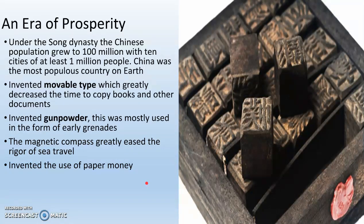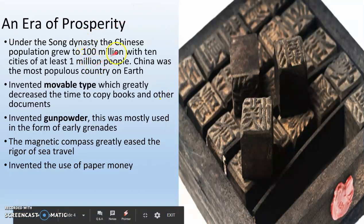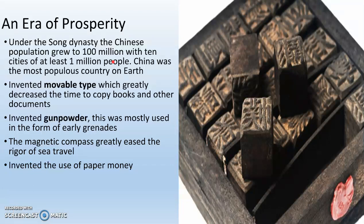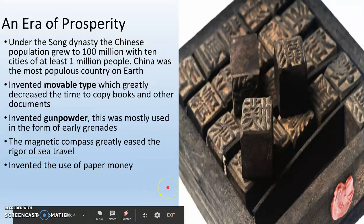They grow to a population of about 100 million — that's about a third of the U.S. population now, which is right at 350 million. They have 10 cities with at least 1 million people. Compare that to major cities of Europe, like Paris, which only had 60,000. This is a huge population, a huge country — still the most populous country on Earth, and was then as well.